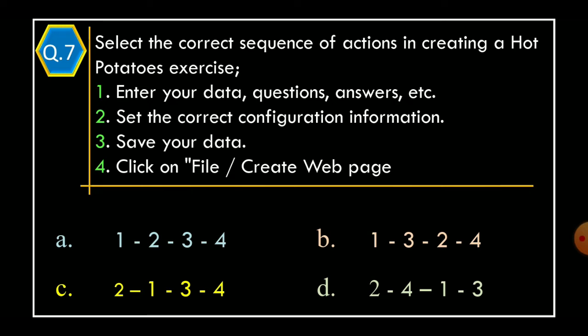Question 7. Select the correct sequence of actions in creating a Hot Potatoes exercise. Statement 1: Enter your data, questions, answers, etc. Statement 2: Set the correct configuration information. Statement 3: Save your data. Statement 4: Click on File or Create Web Page. Options: Option A, 1-2-3-4; Option B, 1-3-2-4; Option C, 2-1-3-4; Option D, 2-4-1-3.